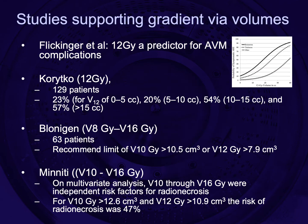There are now a number of studies supporting the importance of gradient outside the target. Studies have looked at lower dose volumes — for instance, Flickinger's 12 Gray volume was found to be a predictor of AVM complications. There have been numerous other studies showing that these lower isodose volumes can be predictive of symptomatic radiation necrosis.